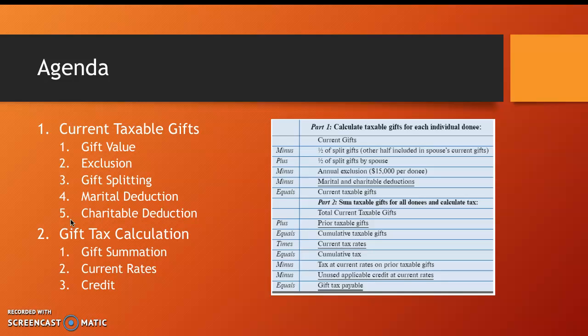In the back half of the presentation, I will discuss current versus prior taxable gifts as well as the unused portion of the applicable credit. The determination of the gift tax is directly applicable to Form 709, the United States gift and generation skipping tax return.